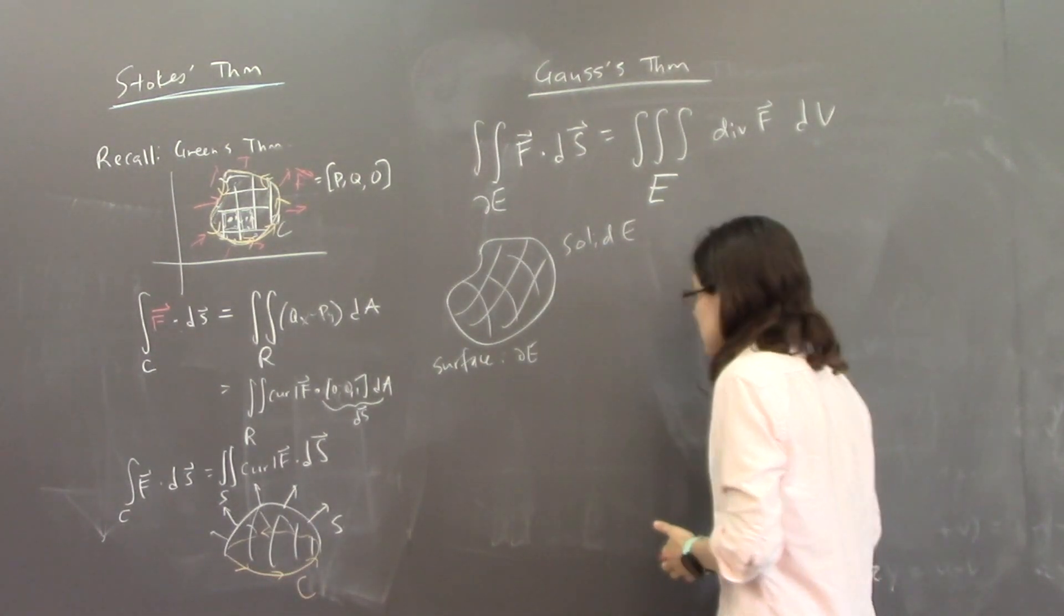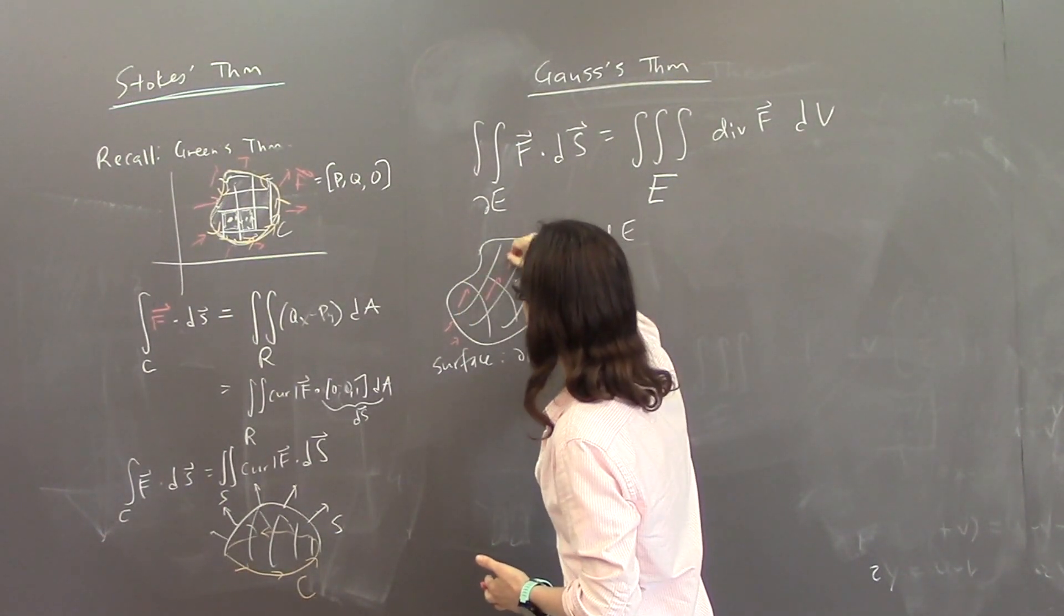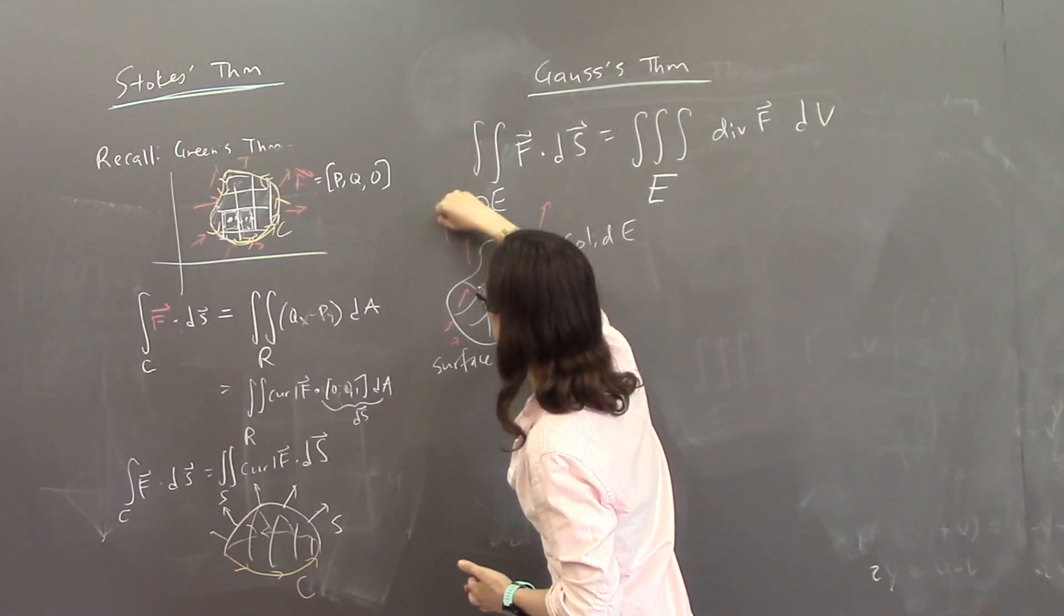And so, again, we imagine that you have some vector field flowing in space. So here's, here might be my vector field, F.